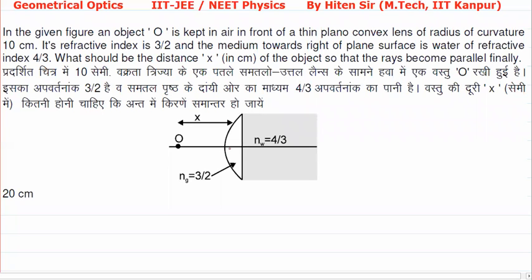In this case, we have a thin lens with air on one side and water on the other. The refractive index of water is 4 by 3. The refractive index of the lens is 3 by 2. The radius of curvature of this surface is 10 cm. The object is kept at distance x.